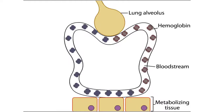This illustration represents the circulation that runs from the lungs to metabolizing tissues and back to the lungs again. Hemoglobin molecules are shown individually here, but in the bloodstream, they are actually packed inside red blood cells.